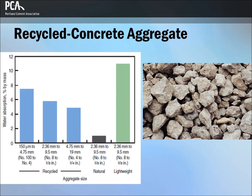Recycled concrete aggregate generally has a higher absorption and a lower specific gravity than conventional aggregate. Absorption values typically range from 3% to 10%, depending on the concrete being recycled. This absorption rate lies between those for natural and lightweight aggregate, shown in the graph to the left. Absorption rates increase as coarse particle size decreases. The particle shape of recycled concrete aggregate is similar to crushed rock, as shown in the picture to the right. New concrete made from recycled concrete aggregate generally has good durability, and recycled concrete aggregate should be tested for durability, gradation, and other properties.